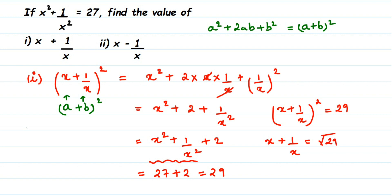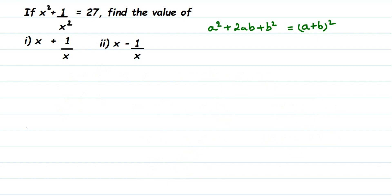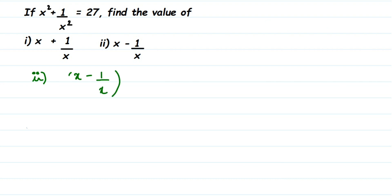Now the same way we do the second one. We take the square of x - 1/x. This time instead of the first identity we use the second identity: (a - b)² = a² - 2ab + b². Instead of plus we have minus — that's the only difference.